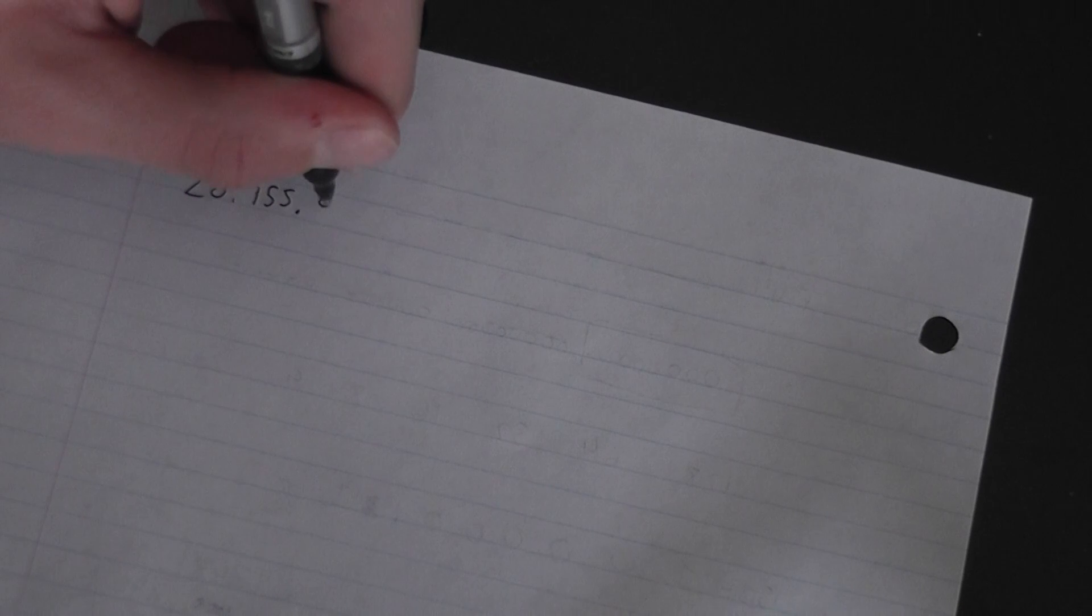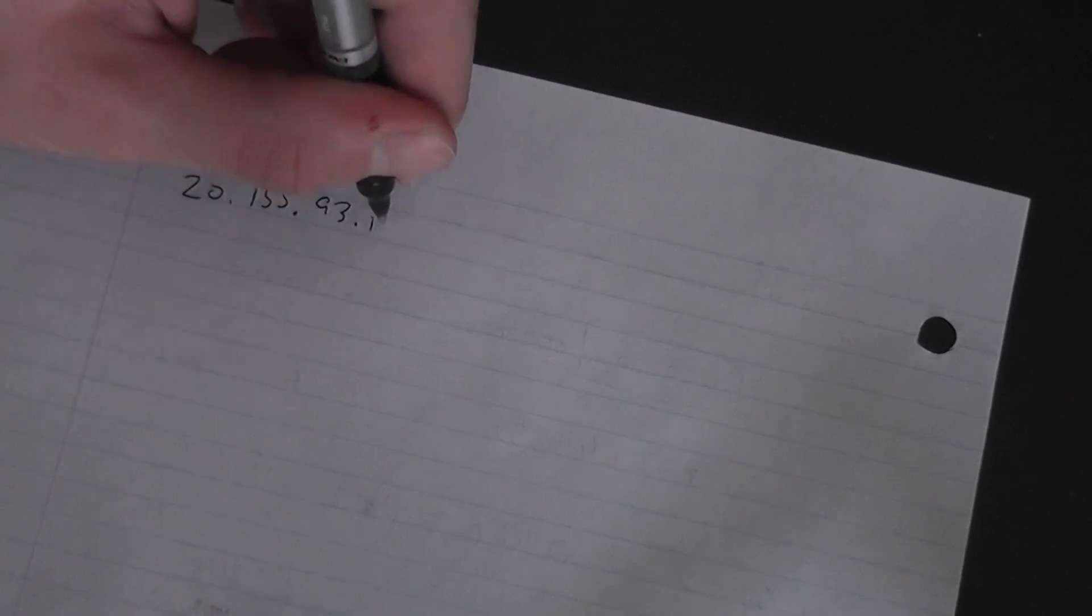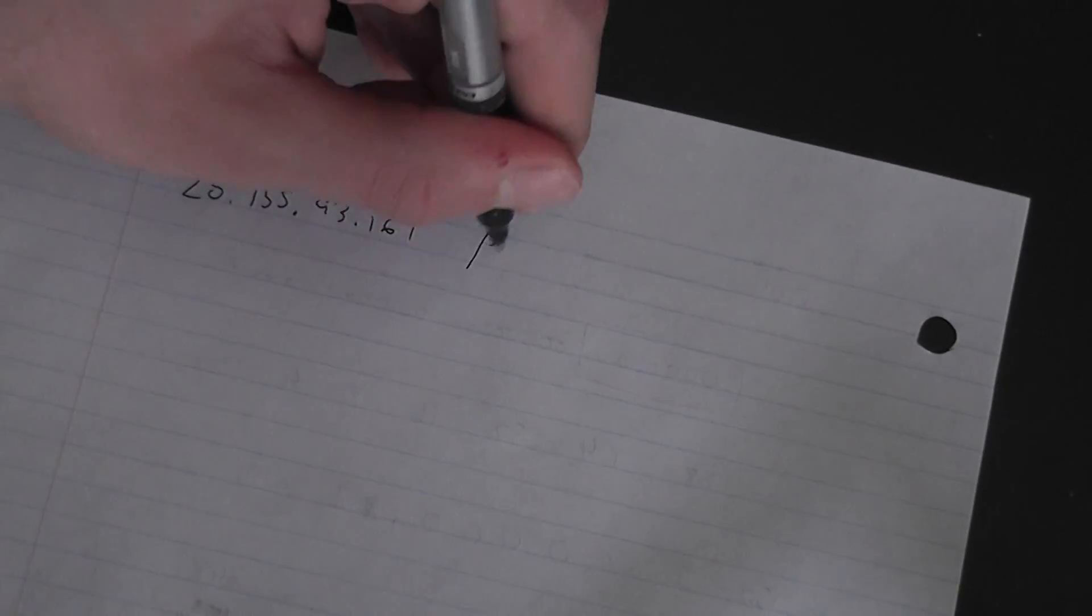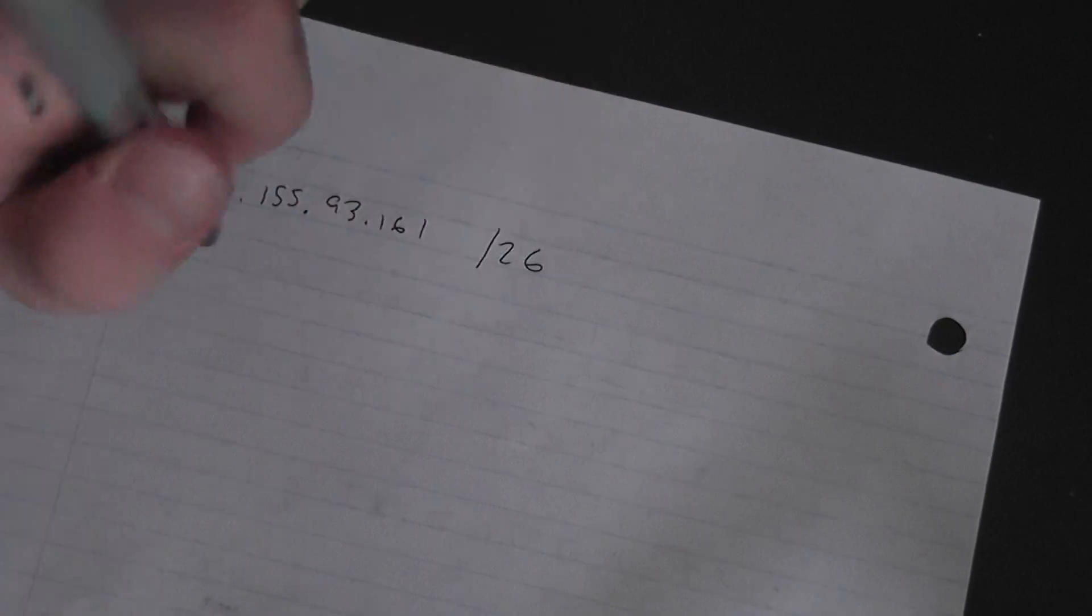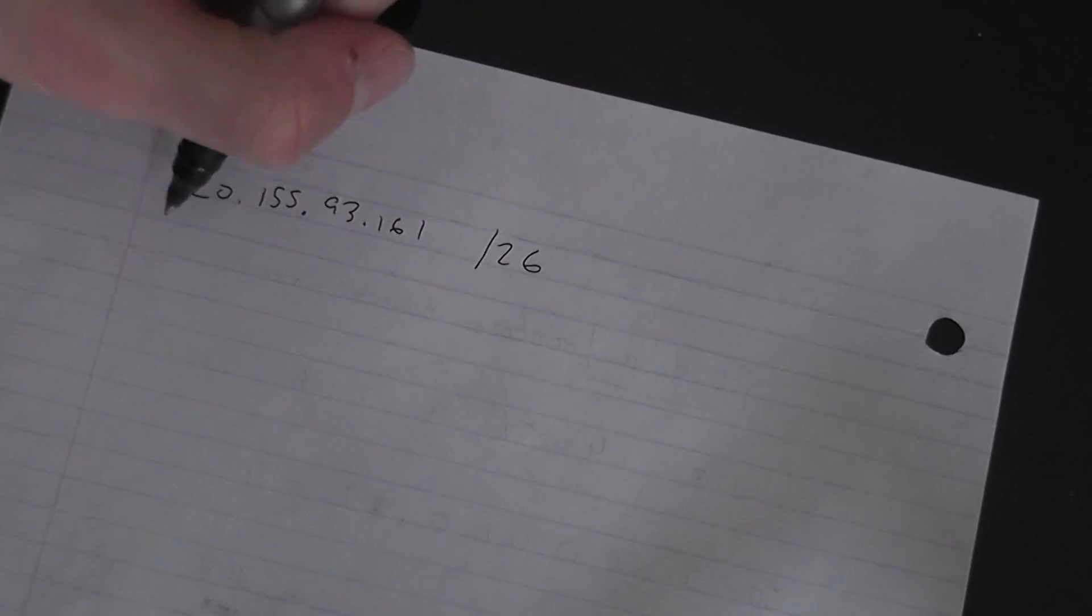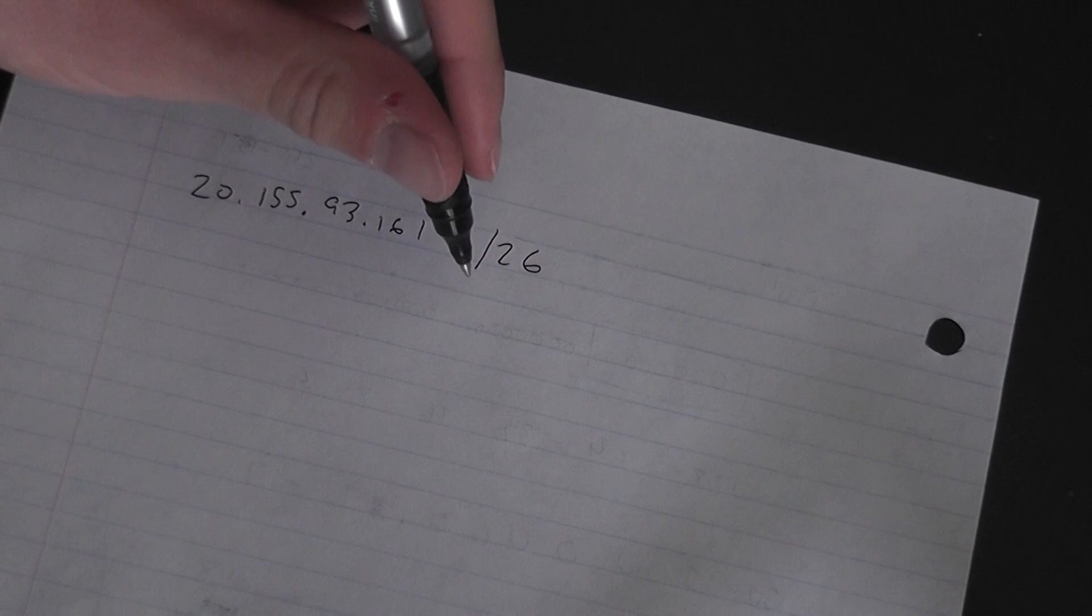Another example is 20.155.93.161/26. What /26 means is there's 26 bits, and on the last bit that's your increment.